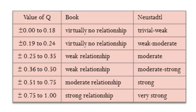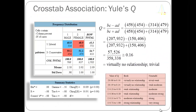Our Yule's Q is 0.16. Using the guideline table, the book would conclude there's virtually no relationship; my view is a bit more optimistic and I would say this is a weak relationship. In some circumstances I might even call it moderate, but it's certainly not strong. It is statistically important, and if the difference were 10 or 12 percentage points I'd have more confidence calling it moderate. Because it's under 10, I'm a bit concerned it's weak, but I wouldn't say there's virtually no relationship.